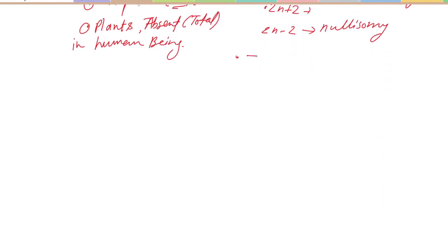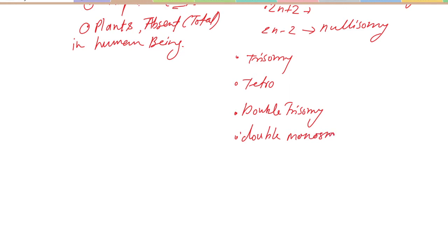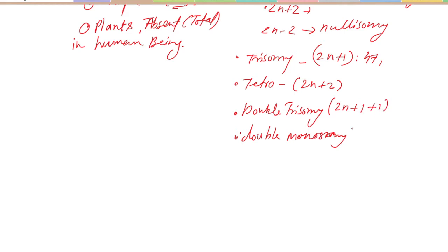To summarize: trisomy is 2n+1 (47 chromosomes); tetrasomy is 2n+2; double trisomy is 2n+1+1; double monosomy is 2n−1−1; and nullisomy is 2n−2. Only these conditions are identified in humans; other conditions are not found in other animals.